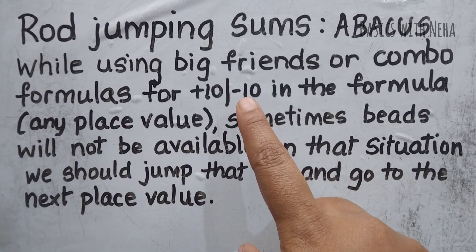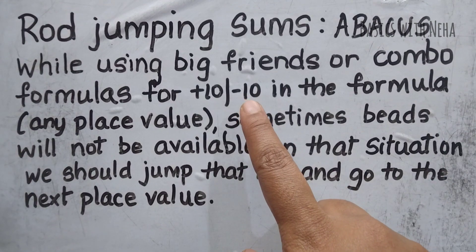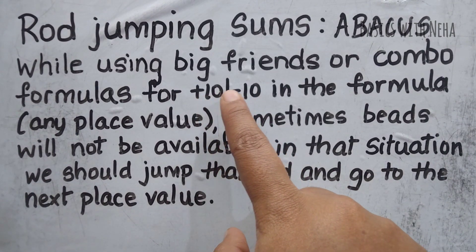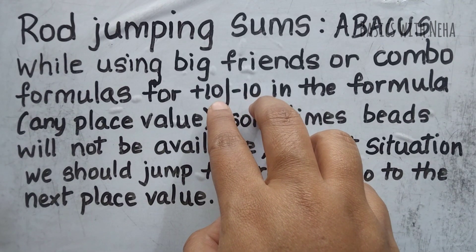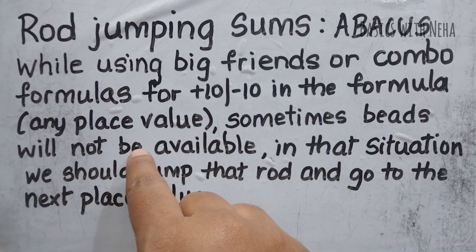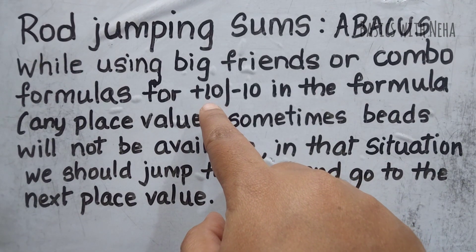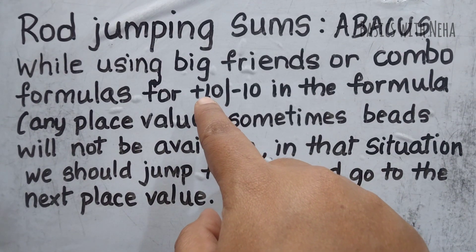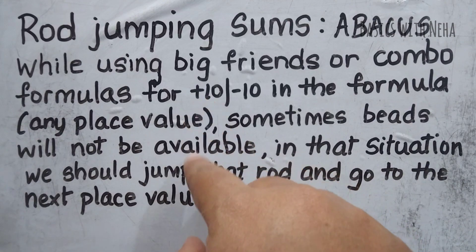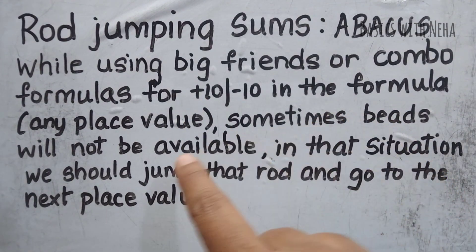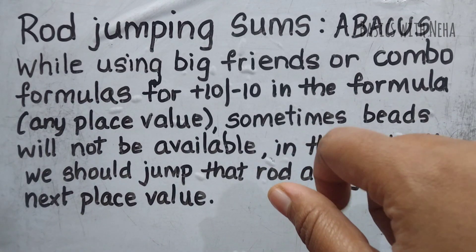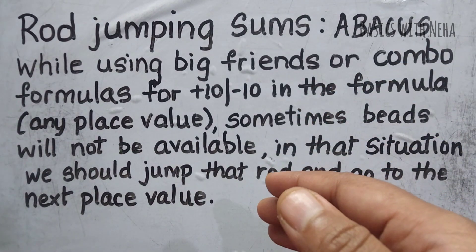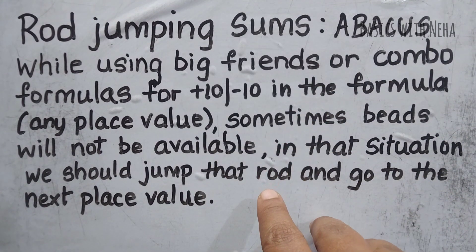When we have to use the big friends or the combination formula — that is for plus 10 and minus 10 — these numbers play an important role when we have to jump the rod. In the formula, it can be any place: plus 100, plus 1000, plus 10,000, plus one lakh, anything. Sometimes beads will not be available, meaning you will neither have a plus 10 or minus 10 to do on the immediate next rod. I'll give you a few examples and we'll work on a few sums so you understand it better.